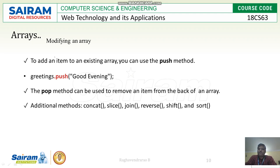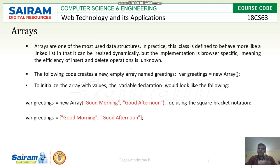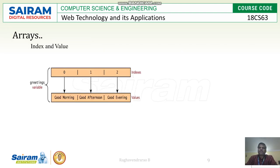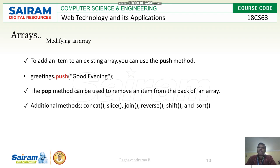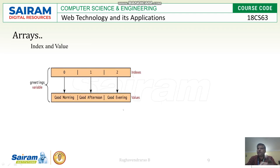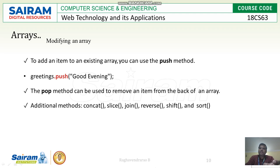You can modify an array using the push method: greetings.push('good evening'). Previously only two values existed — good morning and good afternoon. After pushing, 'good evening' is appended at the end of the array and stored at the next index. Other array methods include concatenation, slice, join, reverse, shift, and so on.